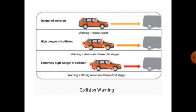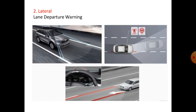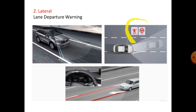The second type is lateral collision avoidance. This includes lane departure warning — if you change lanes, a signal or light turns on and a warning sign is given to the driver. This is known as lateral warning.